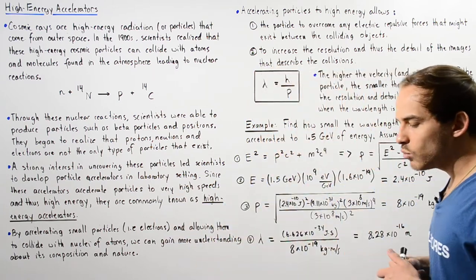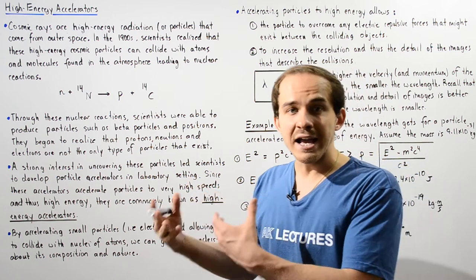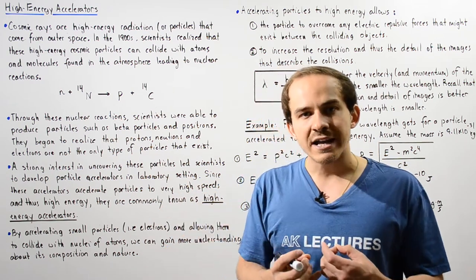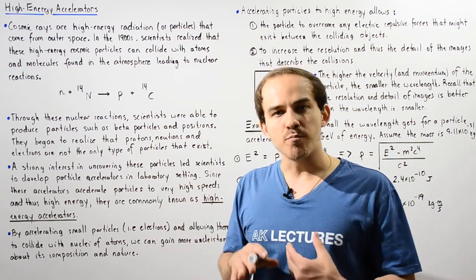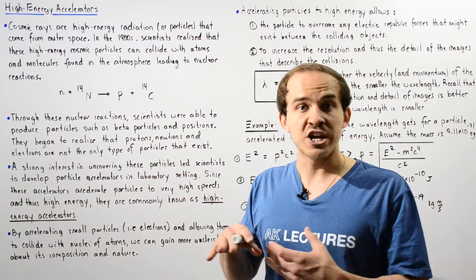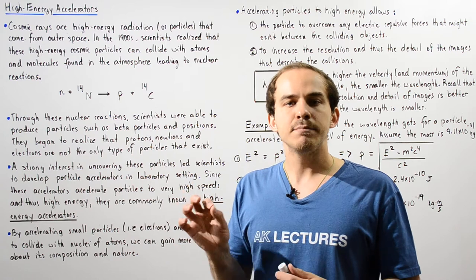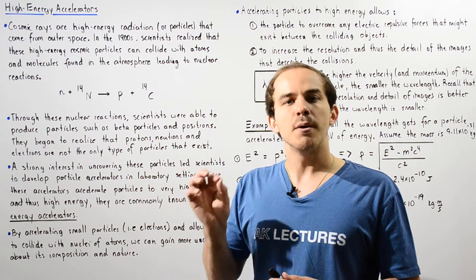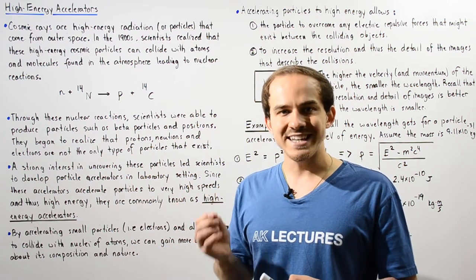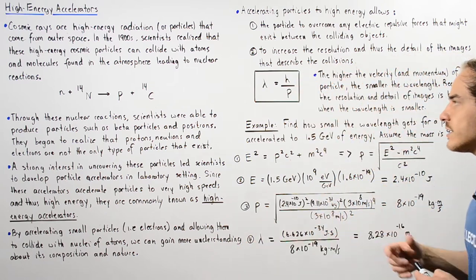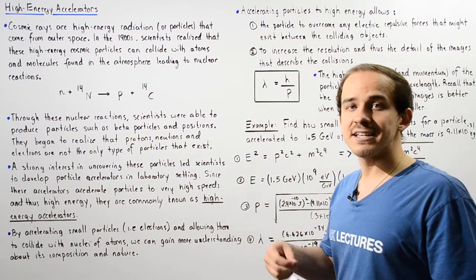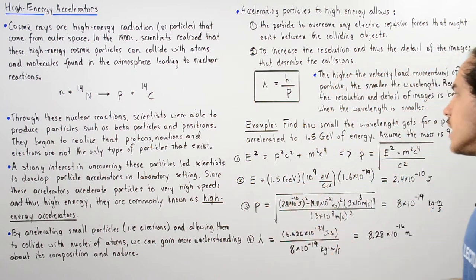That's exactly why electron microscopes, which have electrons that have much smaller wavelengths than light microscopes which have much higher wavelengths, are able to produce images with much greater resolution and detail than light microscopes, because light has a much greater wavelength than electrons.